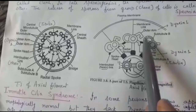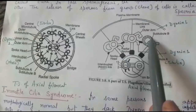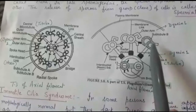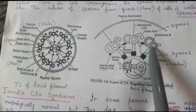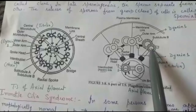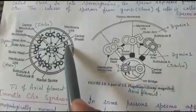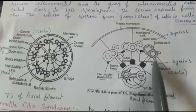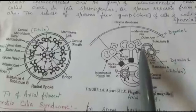Each doublet is made up of two sub-tubules: A sub-tubule and B sub-tubule. The A sub-tubule is further made up of 13 protofilaments, whereas the B sub-tubule is incomplete — it is made up of 10 protofilaments. The B sub-tubule shares three protofilaments with the A sub-tubule.